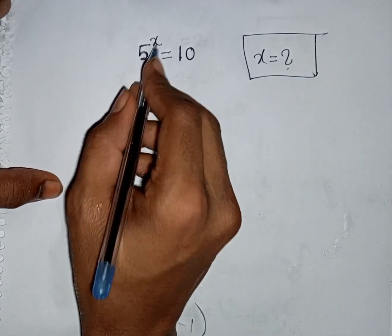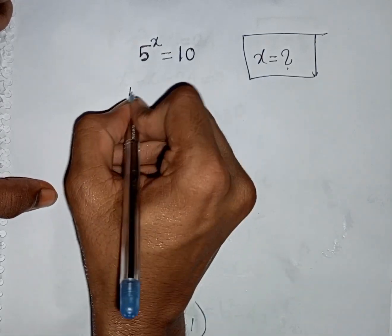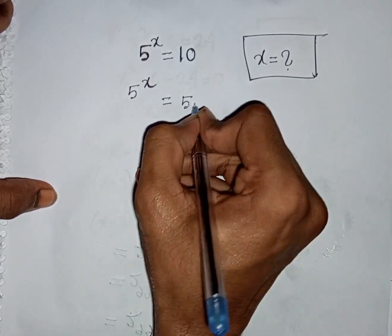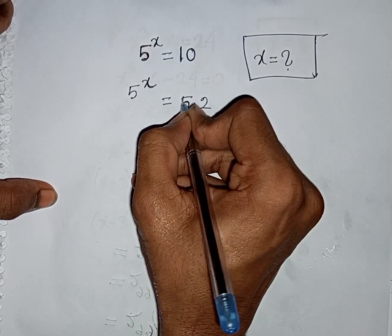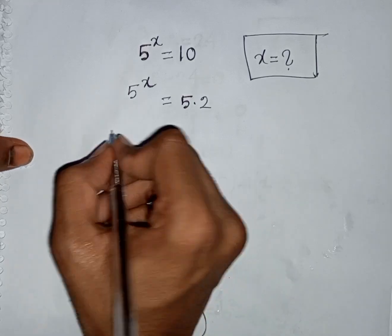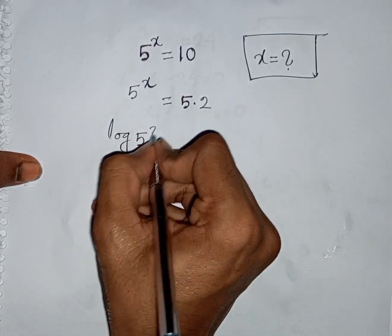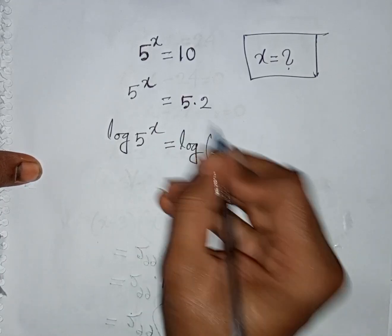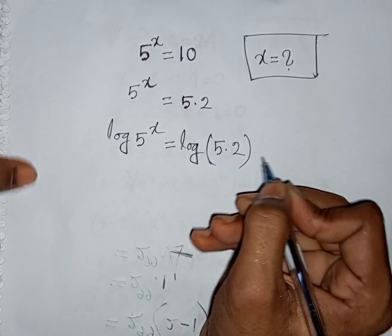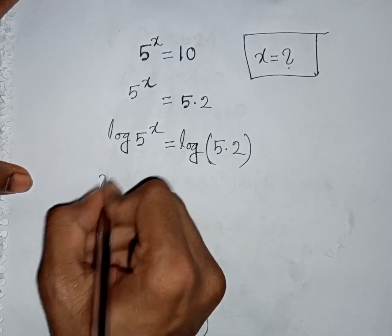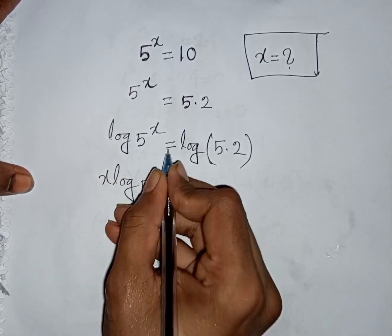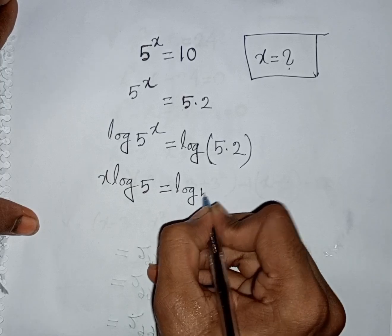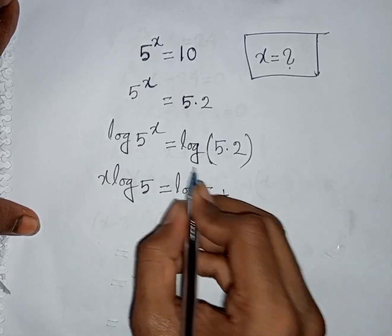How to solve 5^x = 10. Find the value of x. We have 5^x = 10, which can be written as 5^x = 5 × 2. Now we apply log to both sides: log(5^x) = log(5 × 2). This power x moves to the front: x·log5 = log5 + log2.